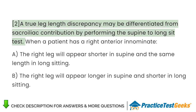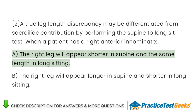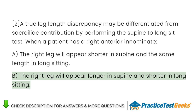A true leg length discrepancy may be differentiated from sacroiliac contribution by performing the supine to long sit test. When a patient has a right anterior innominate: A. The right leg will appear shorter in supine and the same length in long sitting. B. The right leg will appear longer in supine and shorter in long sitting.